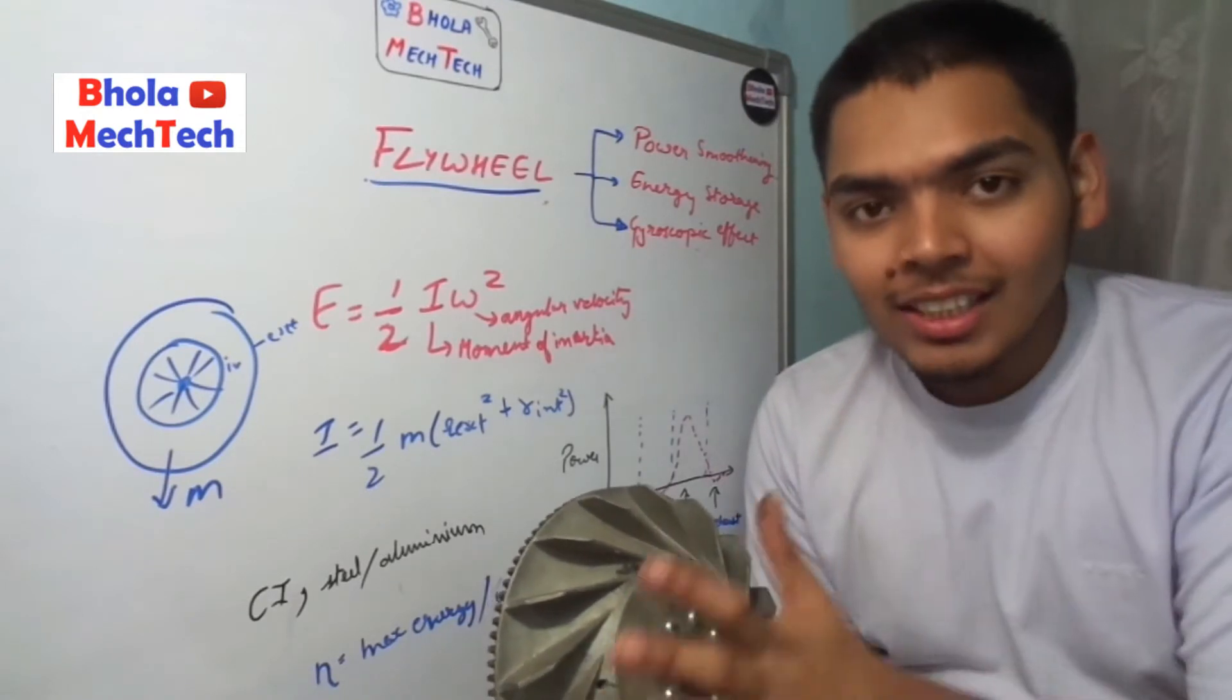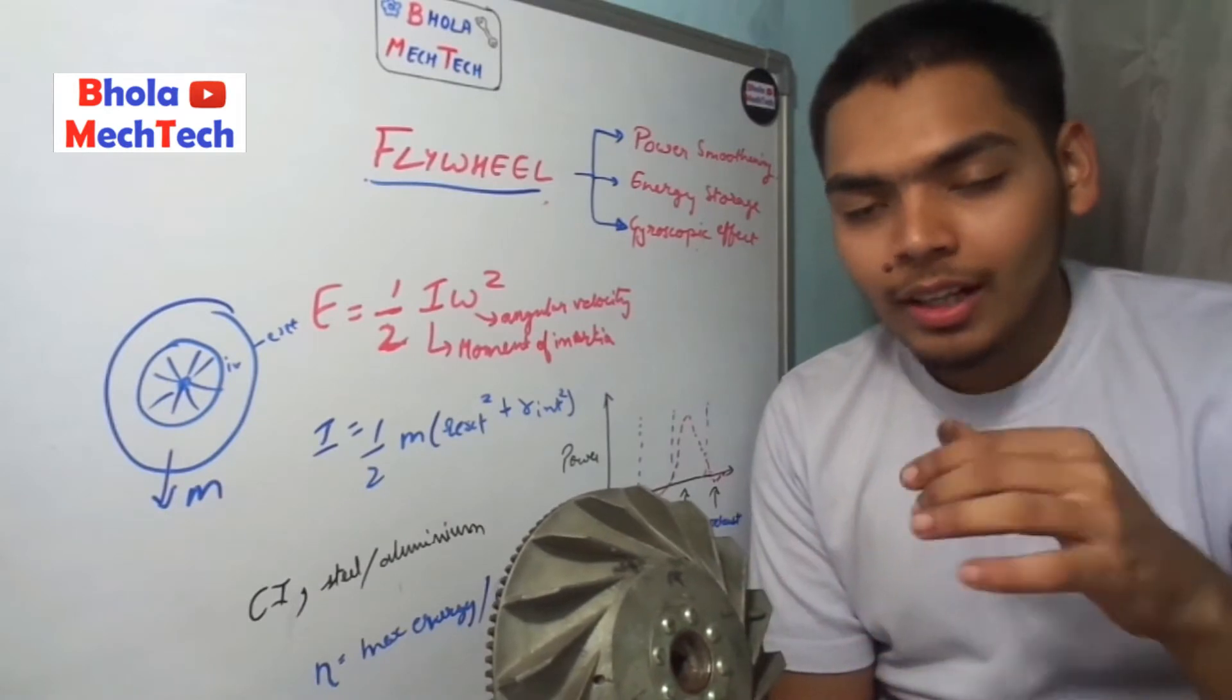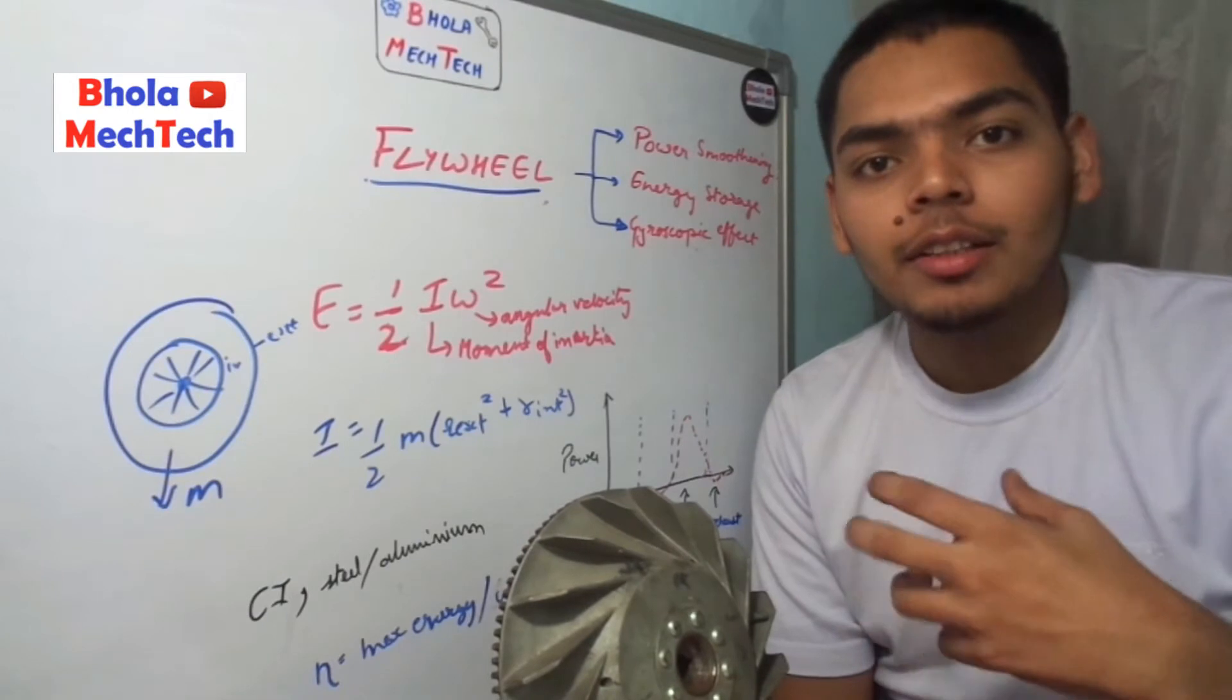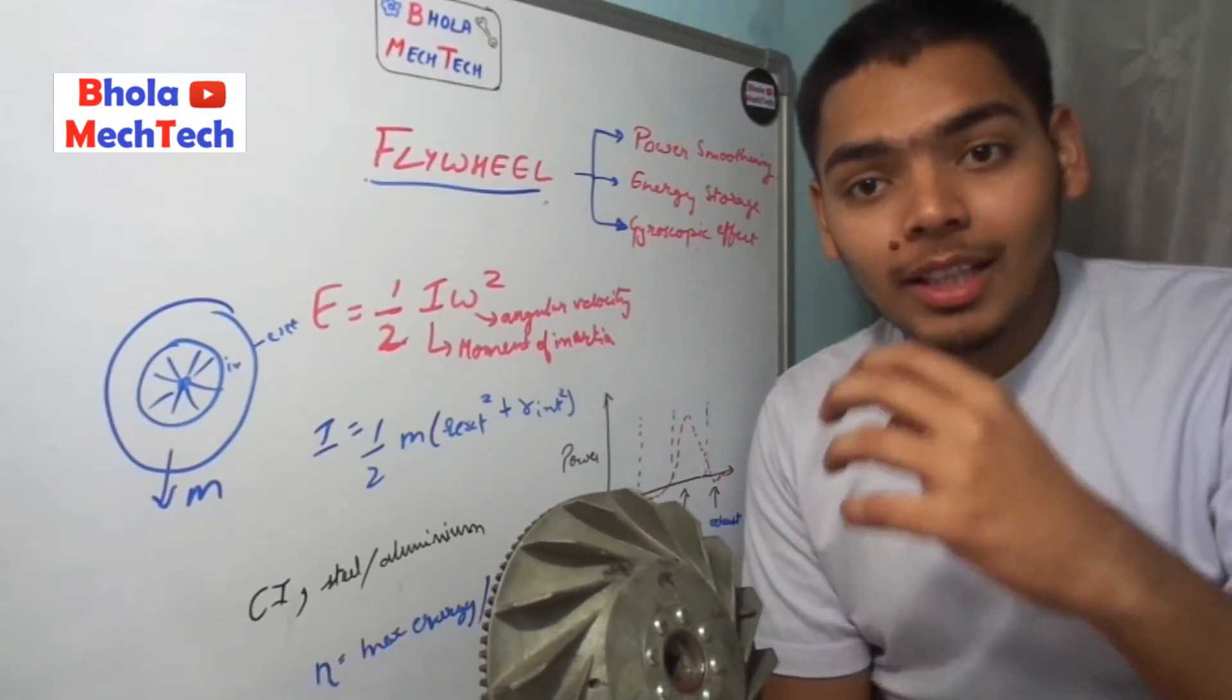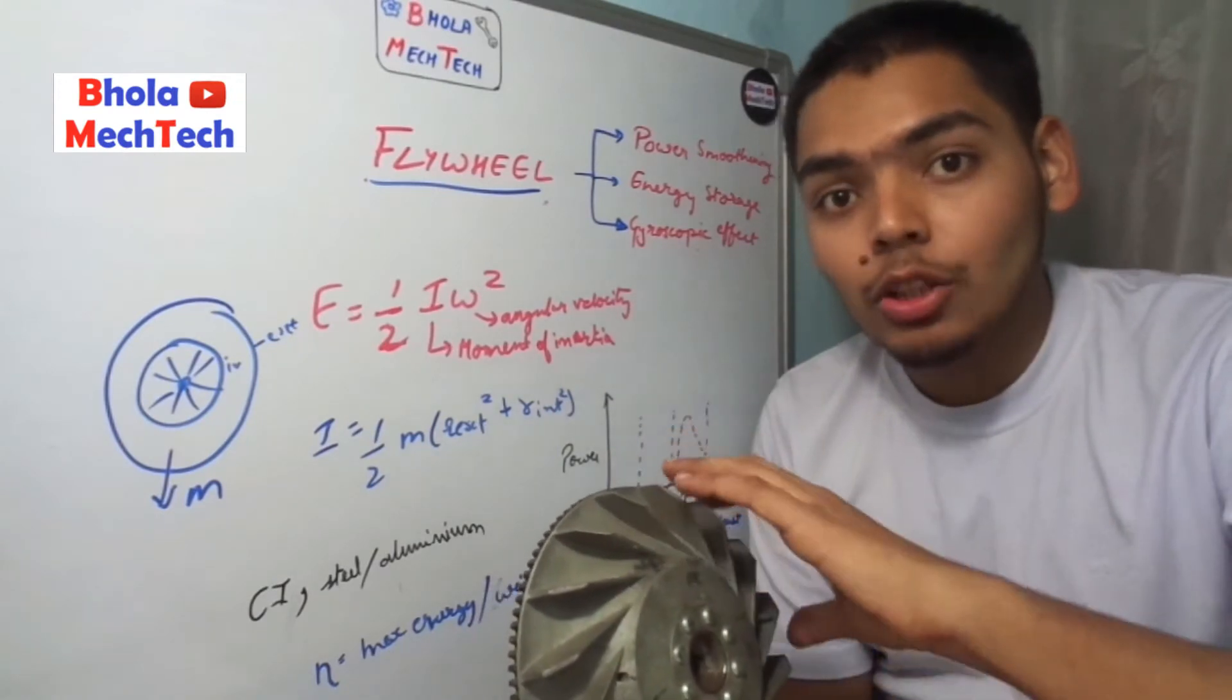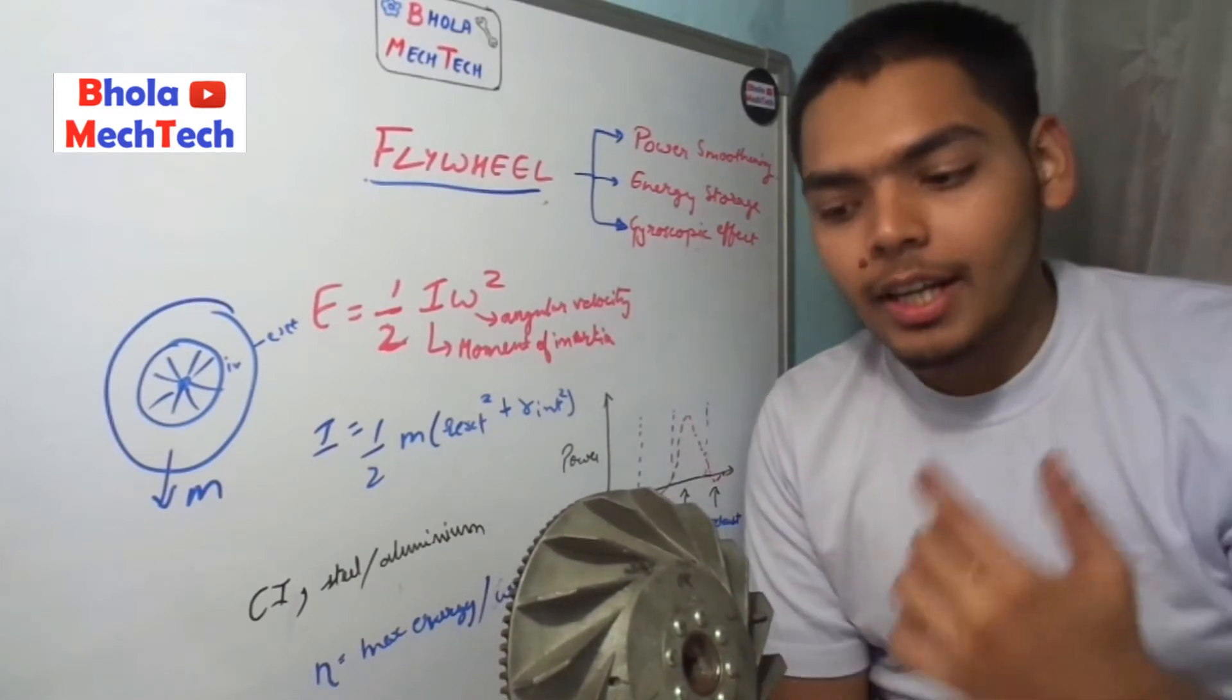This is the storage of energy, how the flywheel stores energy. When strokes are taking place inside the engine, it keeps rotating. When the power stroke takes place, there is a lot of energy produced by the engine and that power stroke provides the rotation to this wheel. Due to its mass it will keep on rotating.